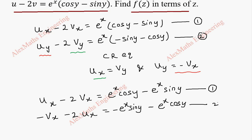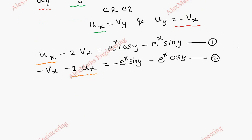So we have two equations. We need the same coefficients so that we can cancel terms. We will multiply the first equation by 2 — since the second already has minus 2 — so that by adding we can cancel ux and find vx.